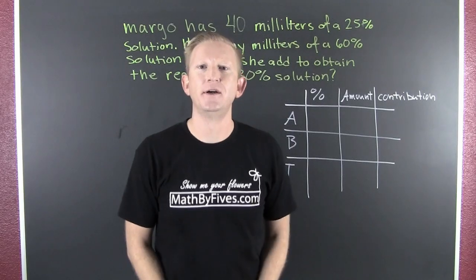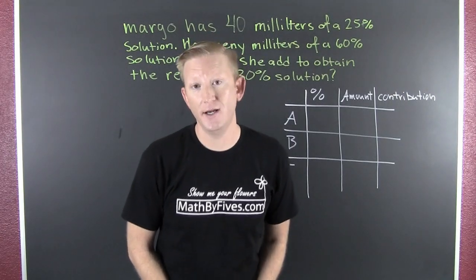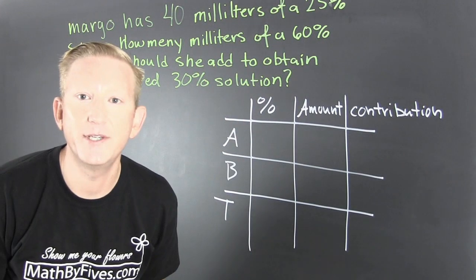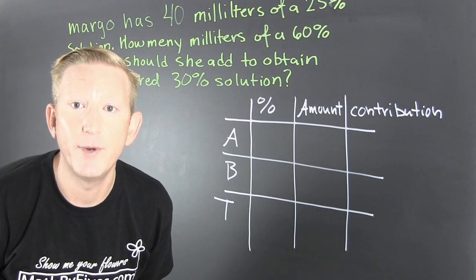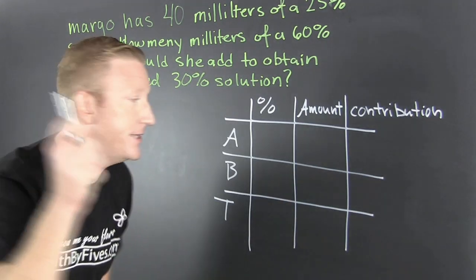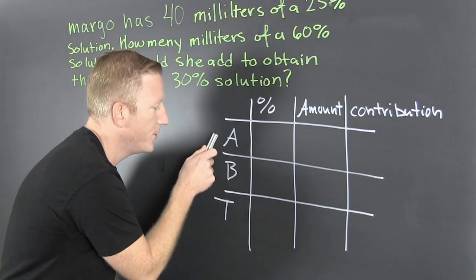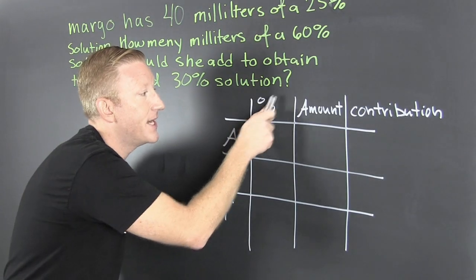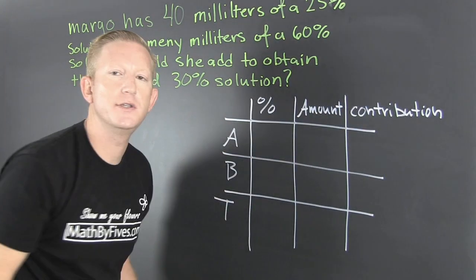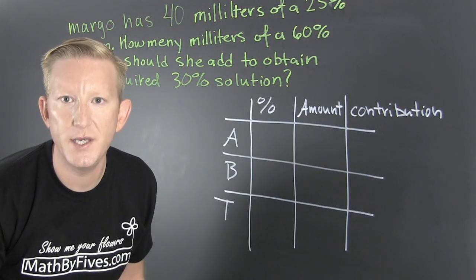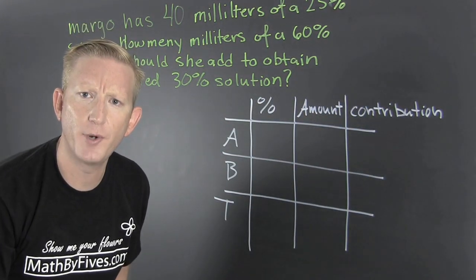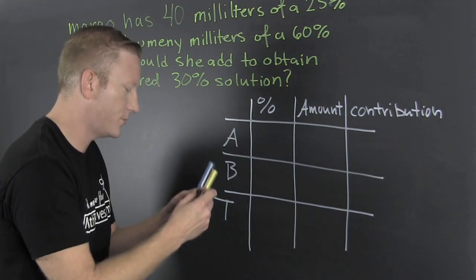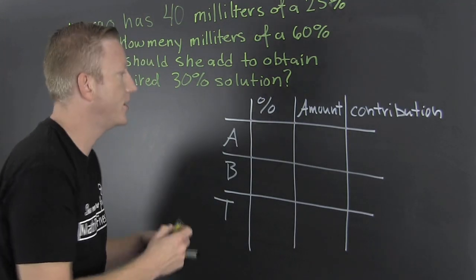In the comments below, comment on how to spell milliliter. I recommend a chart, and this is our chart. We have two solutions and the total — a percent, an amount, and a contribution to the entire mixture. This is a mixture problem, so we're going to fill out this chart.